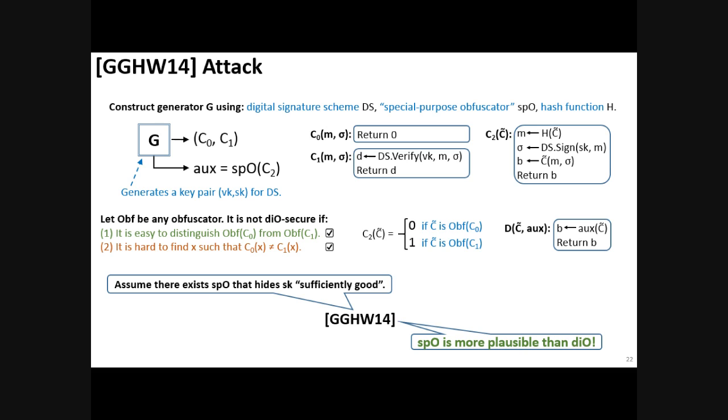Now, to argue that it is hard to find an input on which the two circuits are different, Garg et al. assumed that there exists an obfuscator that obfuscates circuit C2 sufficiently good. What does it mean to be sufficiently good? Intuitively, it means that an adversary should not be able to extract the secret key from this circuit or it should not be helpful to forge any signatures in order to distinguish between circuits C0 and C1.